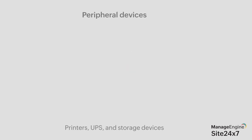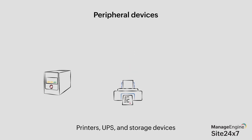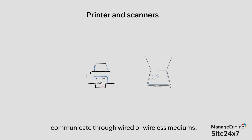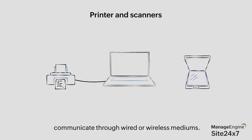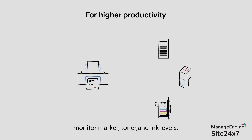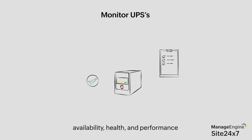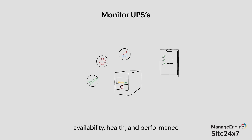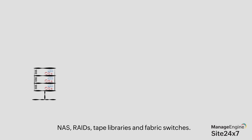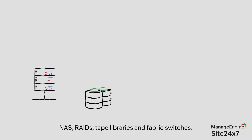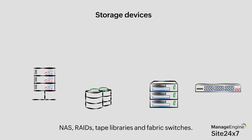Peripheral devices are also usually present in networks, like printers, UPS, and storage devices. Printers and scanners communicate with computers via wired or wireless medium. For higher productivity, we must monitor a network printer's marker, toner, and ink levels. A UPS ensures emergency power if there is any issue in the input power supply. Organizations track its availability, health, and performance to ensure that the UPS device can deliver top performance always. Network attached storage or NAS, redundant array of independent disks or RAID, tape libraries, and fabric switches are some storage devices used in a network that can share data with several devices.